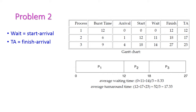Now let us see another problem. Here we are having three different processes P1, P2 and P3, and the corresponding burst time is also given. In addition to that, they give the arrival time. From these values we need to compute the starting time, wait time, finish time, and turnaround time. The starting time and finish time will be taken from the Gantt chart.